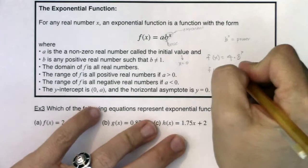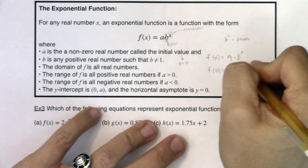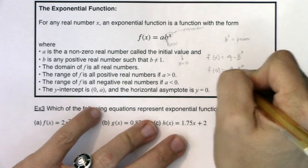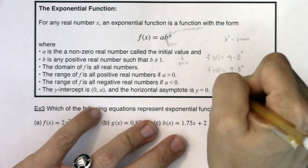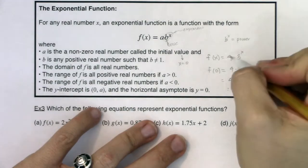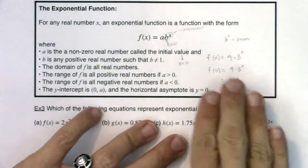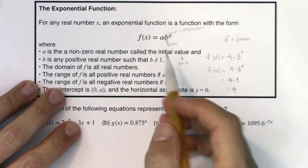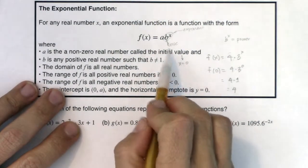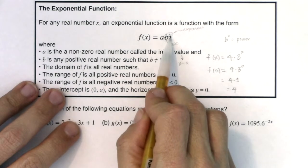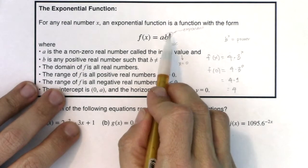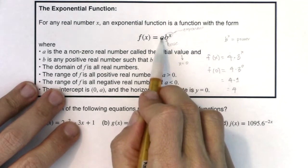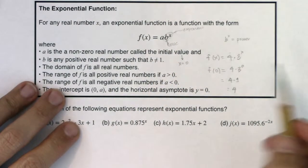When we say a is a non-zero real number called the initial value, sometimes we refer to initial values as our y-intercepts. Like what do we get when x is 0? If I were to plug in 0 for x, this would be 4 times 3 to the 0. And we've talked about how anything raised to the 0 power is the number 1. So this is 4 times 1, which is just 4.